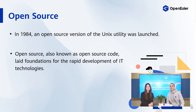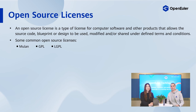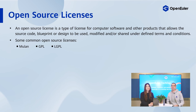In 1984, an open source version of the Unix utility was launched. Open source is a term that originally referred to open source software — code that is designed to be publicly accessible, meaning anyone can see, modify, and distribute the code as they see fit. It lays the foundations for the rapid development of IT technologies. But how can developers protect their source code? We have open source licenses. A software license is a legal agreement that defines how a given piece of software can be used. For software developers who may want to exercise certain rights, permissions, and control over how their work is used, modified, and shared by others, choosing a software license is an important decision.